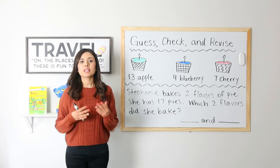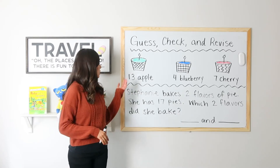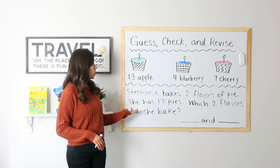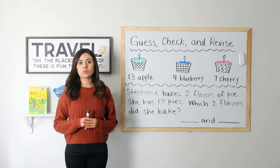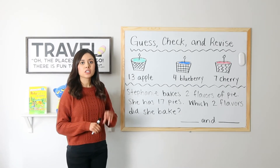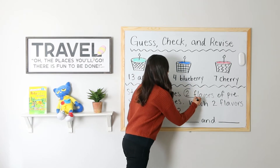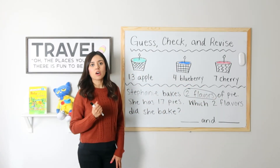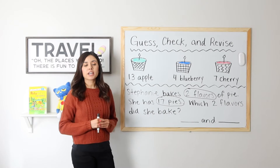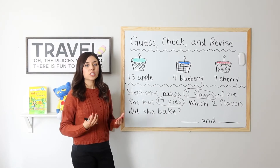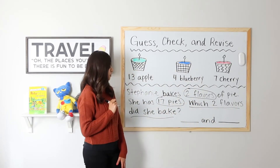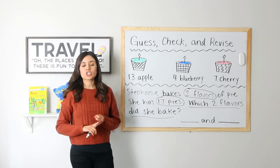Ready for the first example? Let's start by reading the word problem. Stephanie bakes two flavors of pie. She has 17 pies. Which two flavors did she bake? Step two, circle what we already know. We know that Stephanie baked two flavors. How many pies did she bake in all? 17. Step three, underline what we want to find out. We want to know which two flavors did she bake. Our final step is to guess, check, and revise.